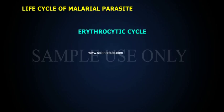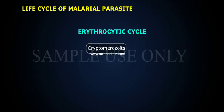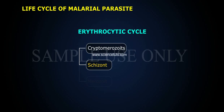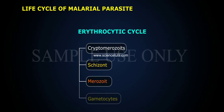Some of the merozoites attack new liver cells to produce more merozoites. In the erythrocytic cycle, cryptomerozoites develop into schizonts, then into merozoites, and finally into gametocytes.